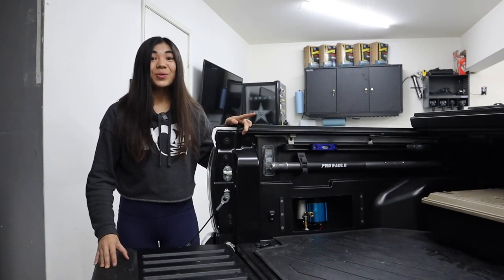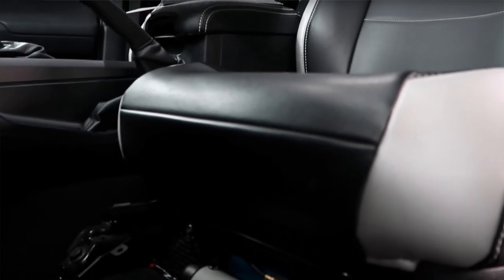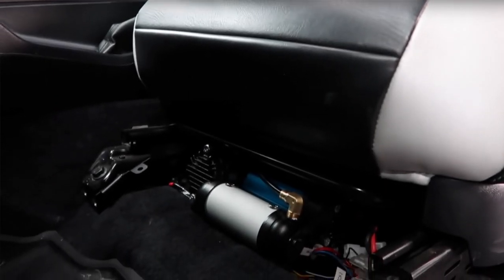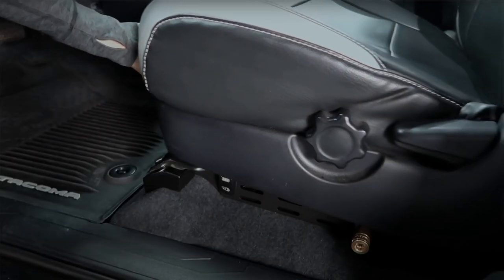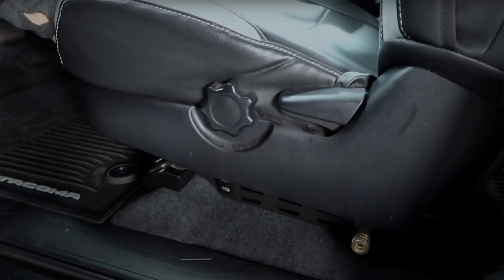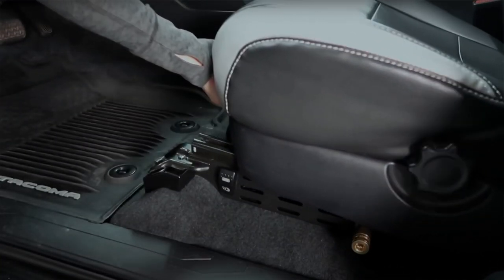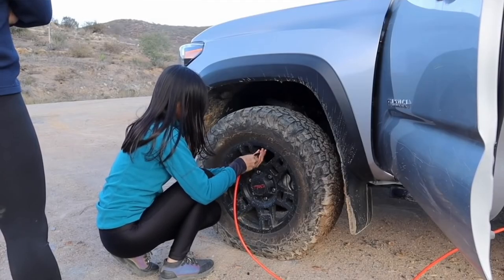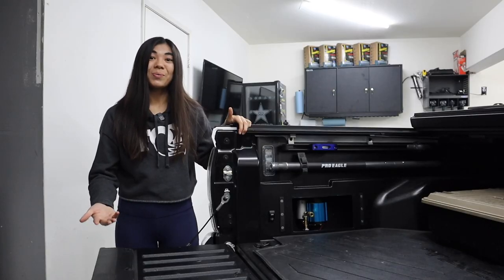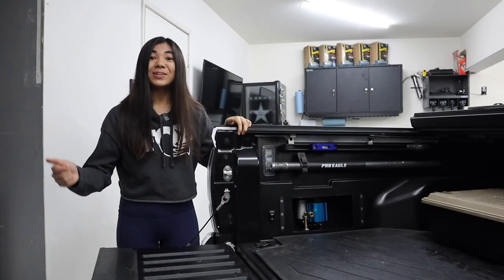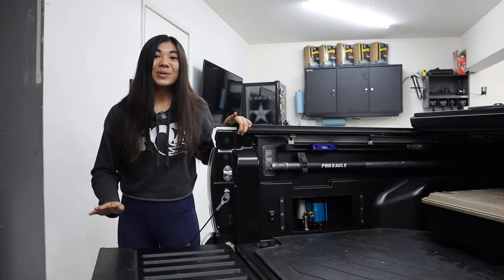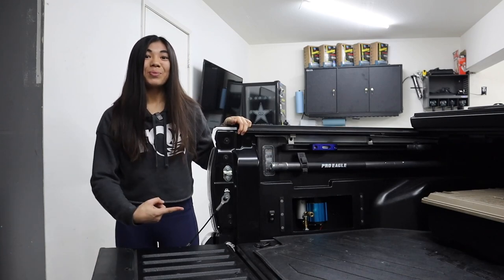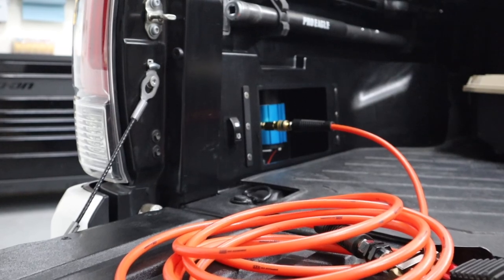I have another video where I wired up an ARB air compressor here on my channel, except for that one, I actually mounted it underneath my driver's seat. So if you clicked on this video looking at air compressor setup saying you want to see different options for your Toyota Tacoma, you can check out that one as well. I'll have it linked down in the description. But today's video is going to be all about this air compressor setup in a Tacoma bedside.